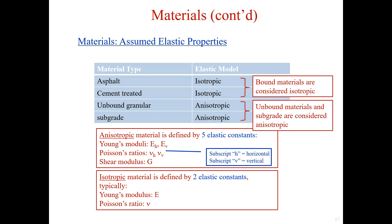The anisotropic materials are normally defined by five elastic constants: the Young's modulus E_h and E_v, the Poisson's ratio mu_h and mu_v, and shear modulus. The isotropic materials are defined by only two elastic constants — the Young's modulus and Poisson's ratio — because for isotropic materials the properties in the h and v directions are the same, so we only need one symbol to represent them. There is no separate shear modulus because for isotropic material, shear modulus G can be expressed by the other two parameters E and mu.